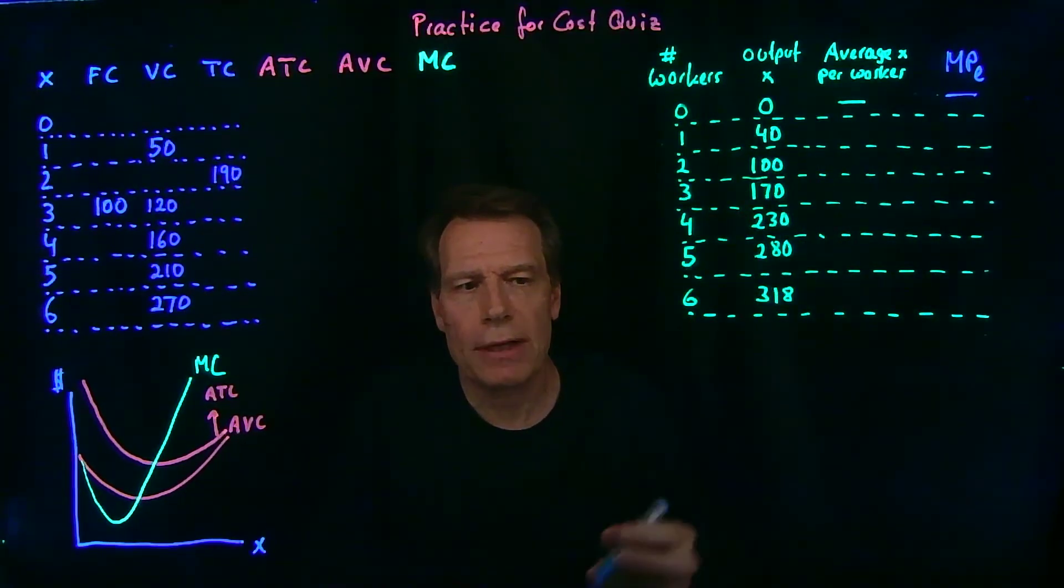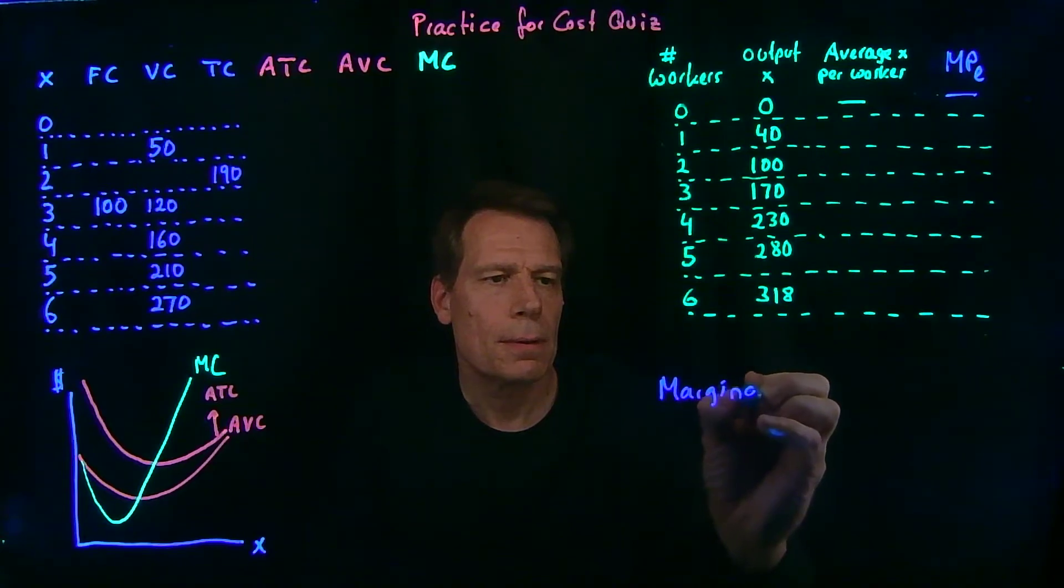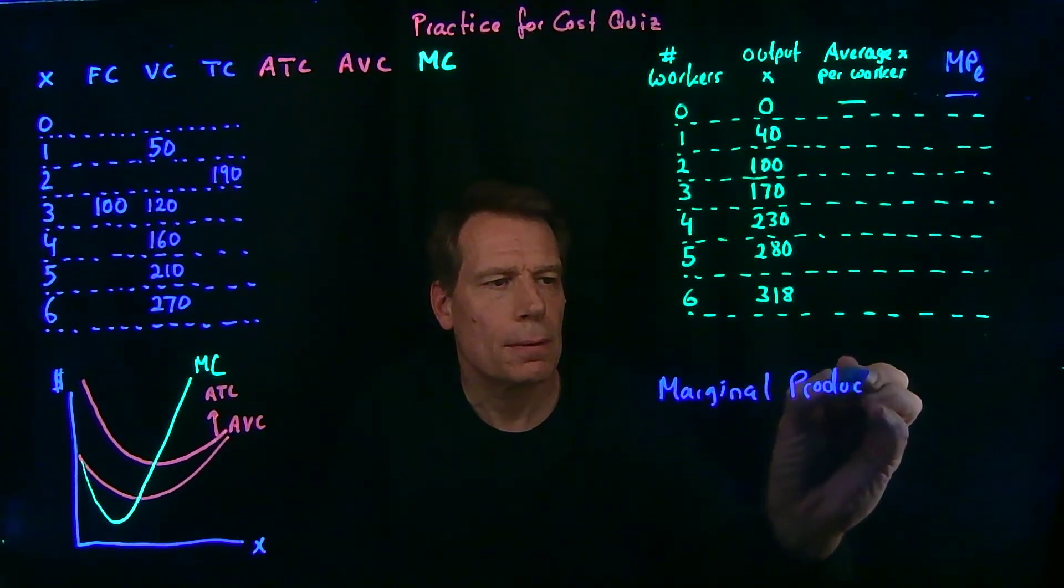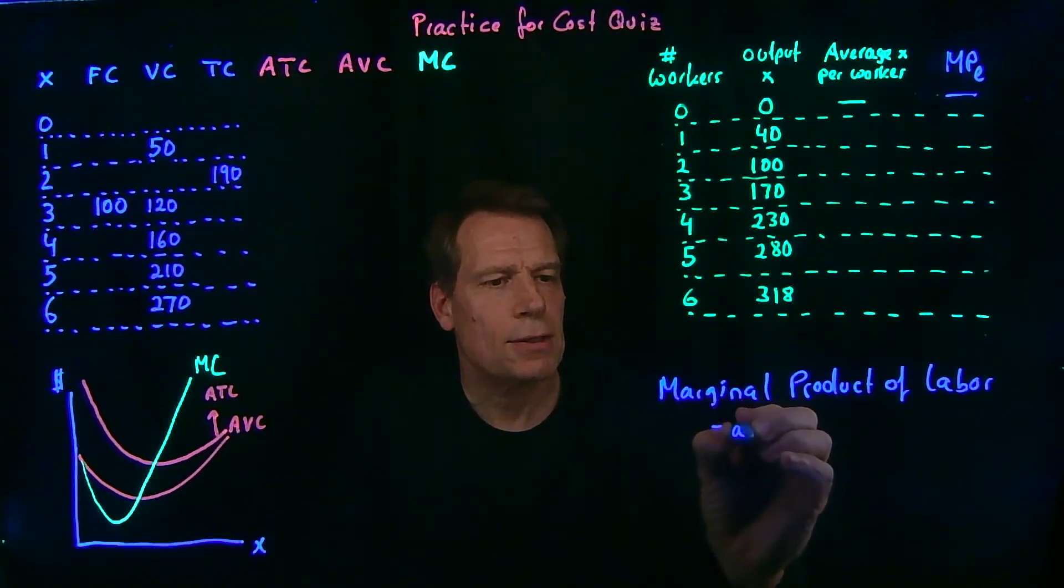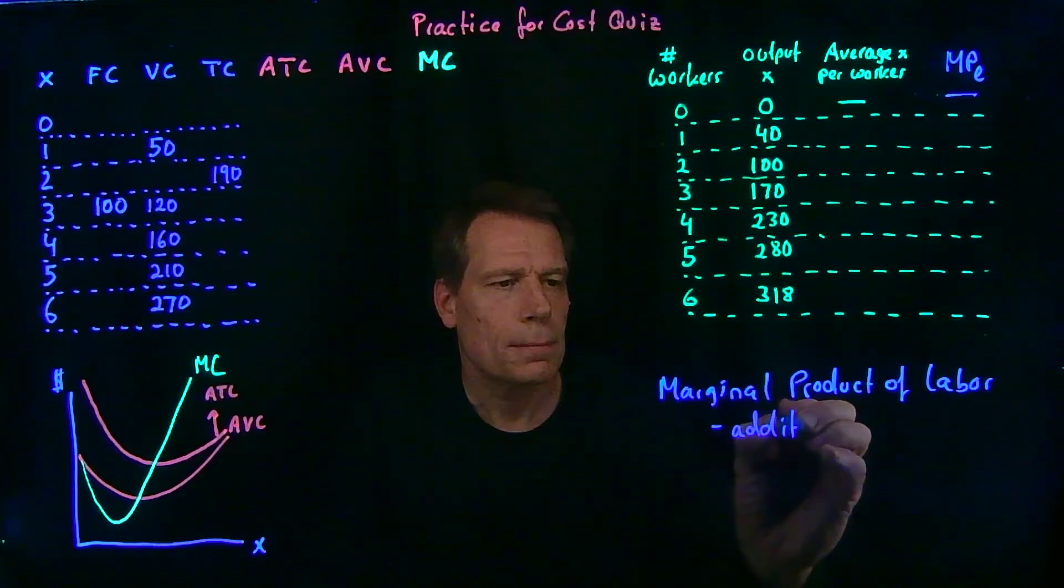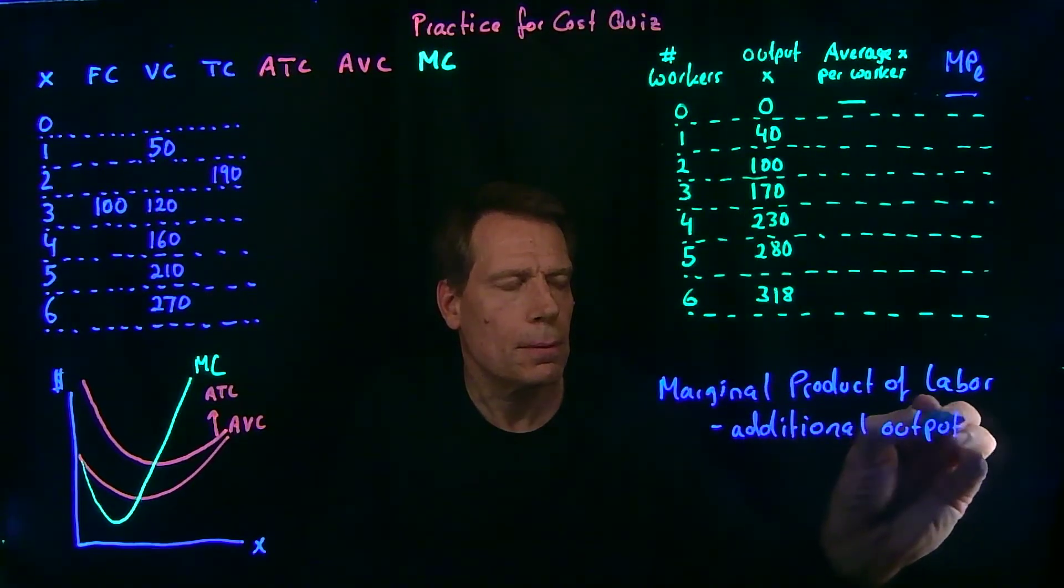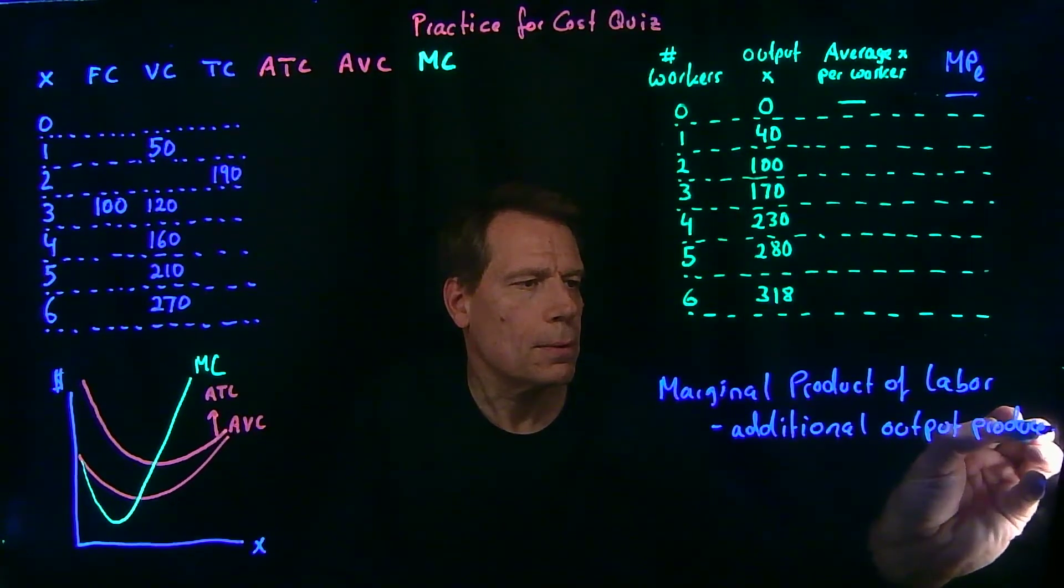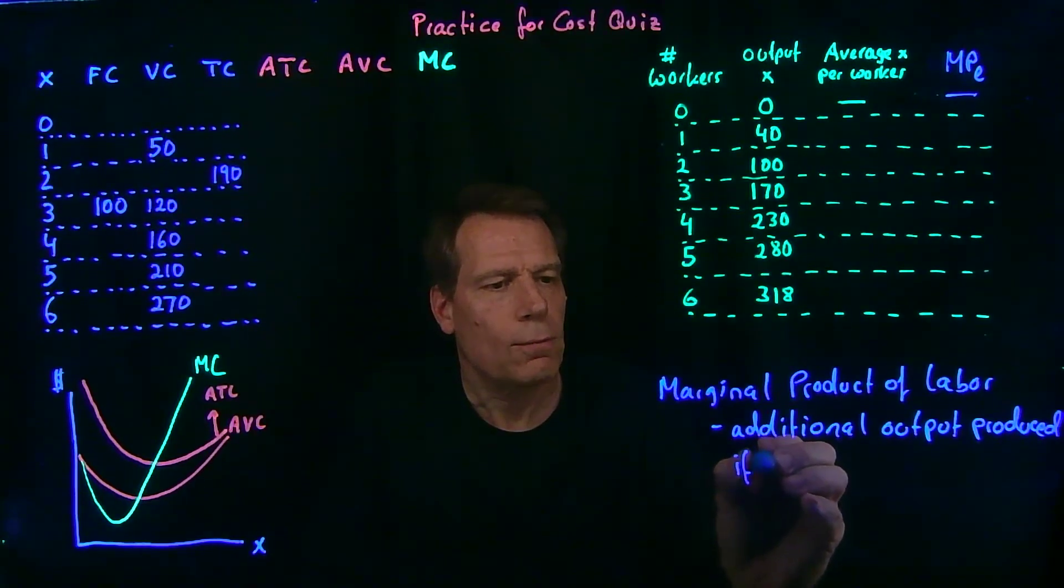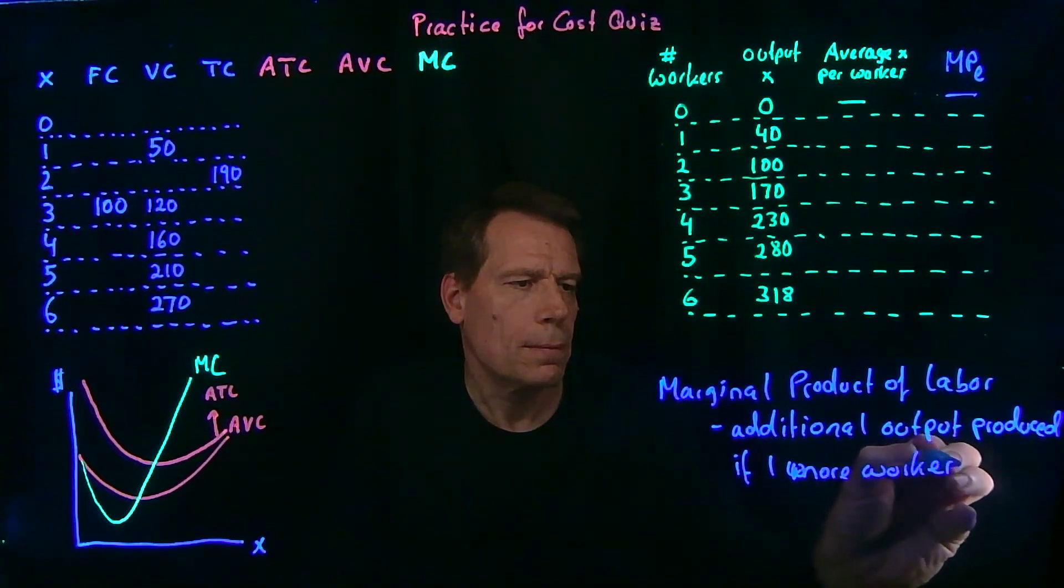which we call the marginal product of labor. The marginal product of labor is the additional output produced if one more worker is hired.